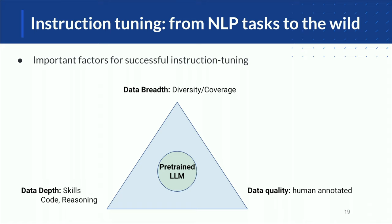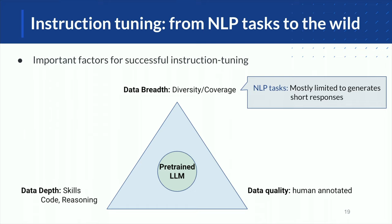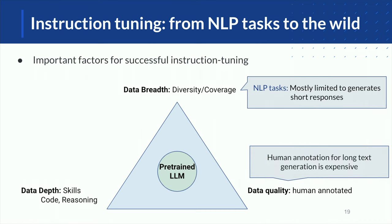We then started studying this phenomenon more closely and understood there are three important factors for the success of instruction tuning: data breadth, data depth, and data quality. We want diverse instructions with high coverage, introduce different skills such as coding and reasoning, and ensure our data is high quality. If you just look at NLP tasks, they are mostly limited to generating short text. But state-of-the-art large language models now can generate really long text. Human annotation for these higher-quality long-text tasks can be very noisy or very expensive.